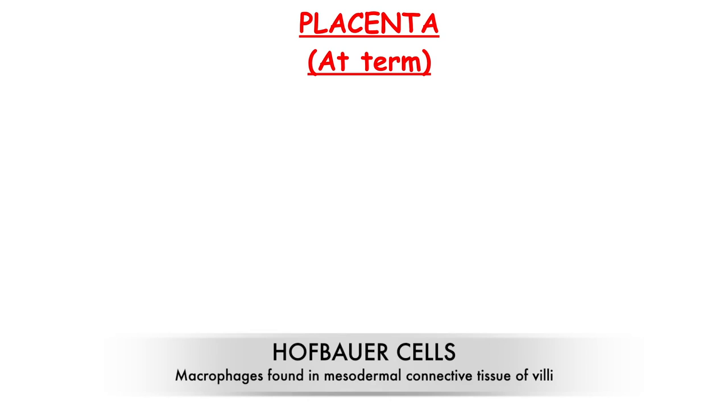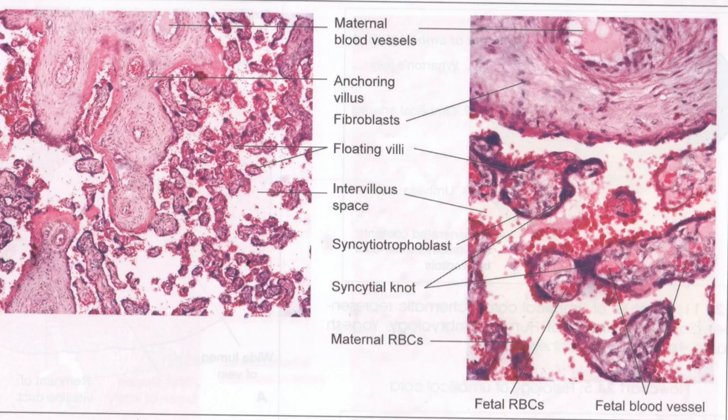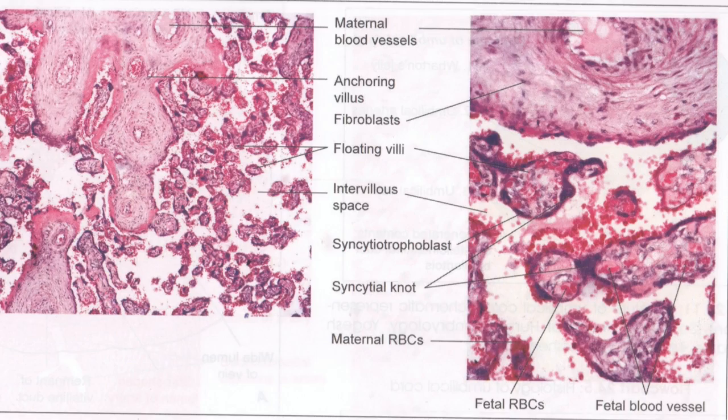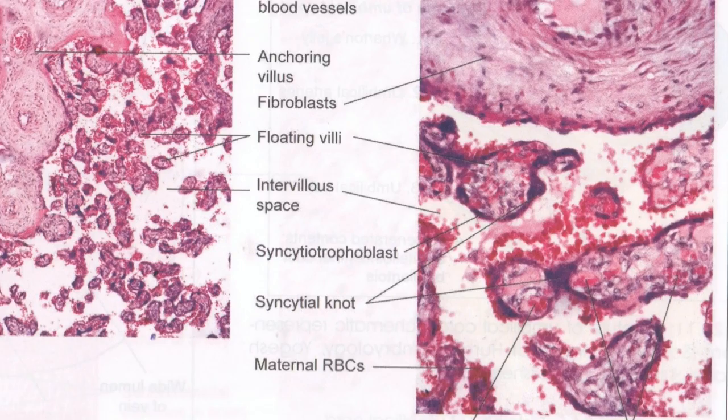Placenta at term shows cut sections of multiple villi. Each villus has a central core of connective tissue containing fetal blood vessels and embryonic connective tissue, and an outer covering of eosinophilic multinucleated syncytiotrophoblast. Villi are separated by intervillus space which appears empty with traces of maternal blood.